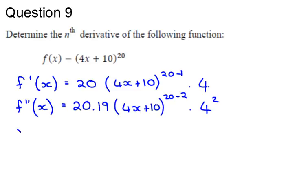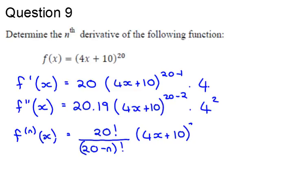That should be enough to see the pattern for the nth derivative. So let's find the nth derivative. So I've got 20 times 19, which looks like we've got 20 factorial, but we've got to take away everything below it. So that's 20 minus n factorial. The first one would have been 20 minus 1, which is 19. The second one is 20 minus 2, which is 18. Then, don't forget your 4x plus 10. And then you've got 20 minus n, times by 4 to the power of n.